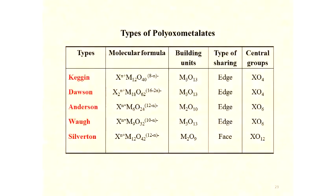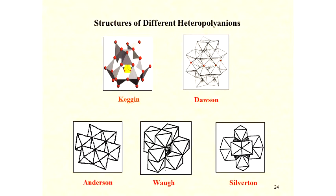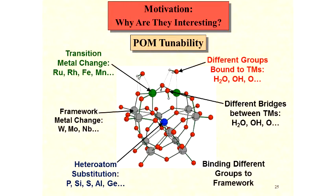Polyoxometalates absorb only UV light, but their combination with metalloporphyrins makes them able to utilize visible light. This table summarizes some types of polyoxometalates which could potentially be used in this research. Here are some examples of structures of polyoxometalates. And this diagram shows how polyoxometalates could be tuned.